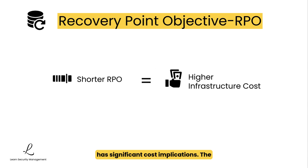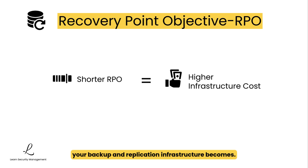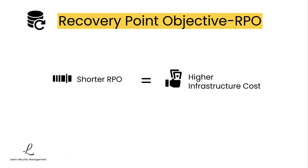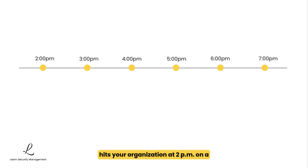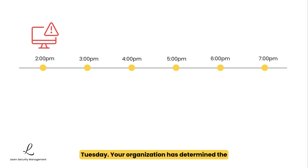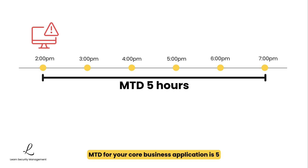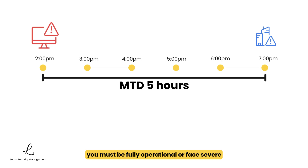Recovery Point Objective has significant cost implications. The closer to zero your RPO gets, the more expensive your backup and replication infrastructure becomes. Let's see how these concepts work together through a real-world example. Imagine a ransomware attack hits your organization at 2pm on a Tuesday. Your organization has determined the MTD for your core business application is 5 hours, meaning by 7pm you must be fully operational or face severe business consequences.